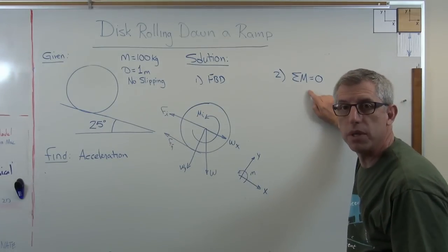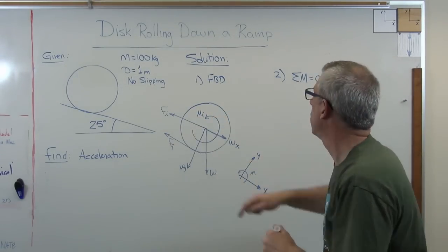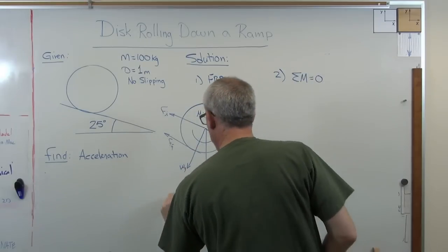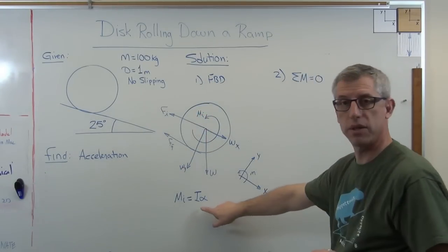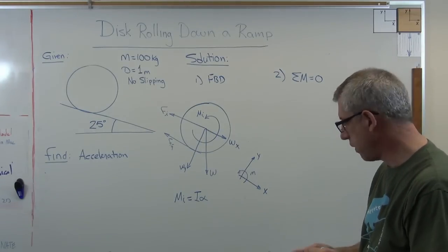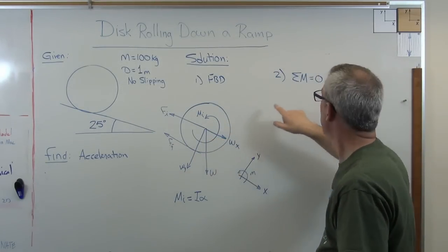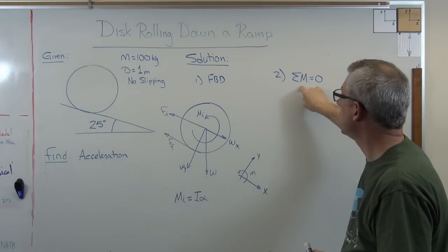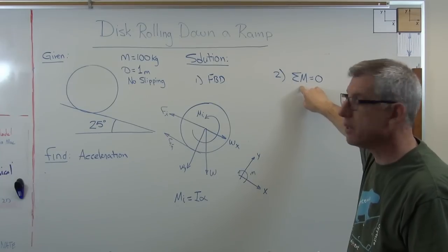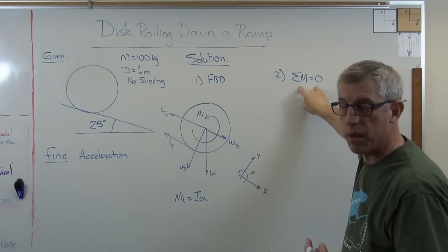So I'm going to write the sum of the moments equals zero. Now, sum of the moments equals zero because we have this inertial moment in here. Just as a reminder, mi equals i alpha. Well, that's the right side of Newton's law. So because we've got this drawn here as an inertial moment, we've already got Newton's law taken care of. And this summing the moments equals zero makes it look a lot like statics, even though it's dynamics. And this is what we call an equation of dynamic equilibrium.